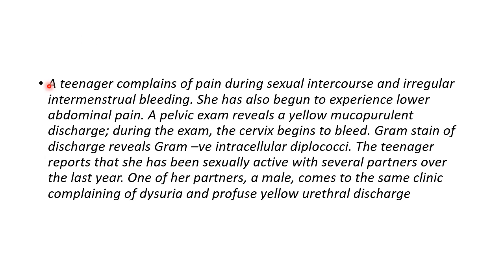Now let us discuss a clinical case to understand the features of Neisseria gonorrhea. A teenager complains of pain during sexual intercourse and irregular intermenstrual bleeding. She has also begun to experience lower abdominal pain. A pelvic exam reveals a yellow mucopurulent discharge, and during the exam the cervix begins to bleed. Gram stain of the discharge reveals gram-negative intracellular diplococci. The teenager reports she has been sexually active with several partners over the last year. One of her partners, a male, comes to the same clinic complaining of dysuria and profuse yellow urethral discharge.